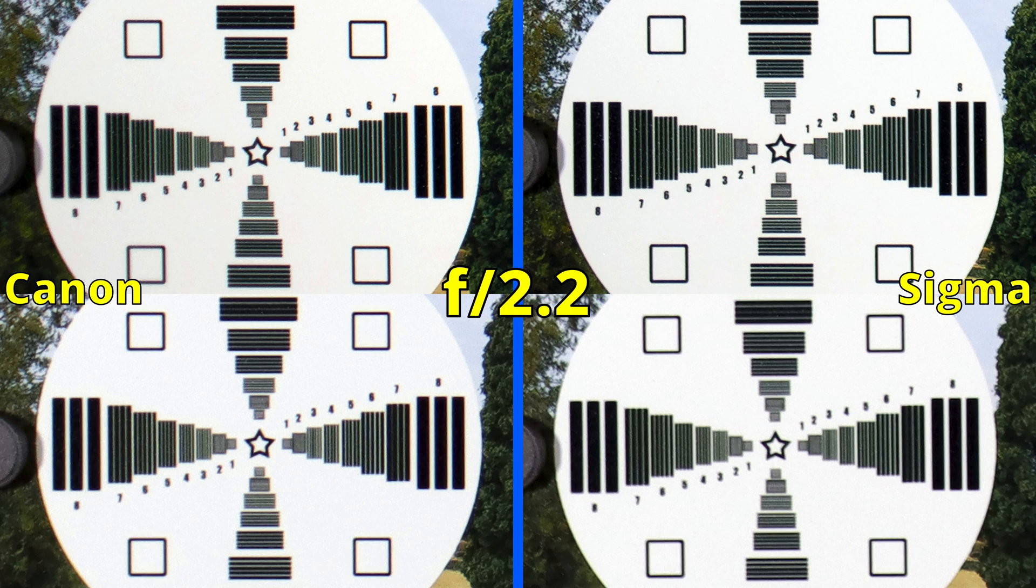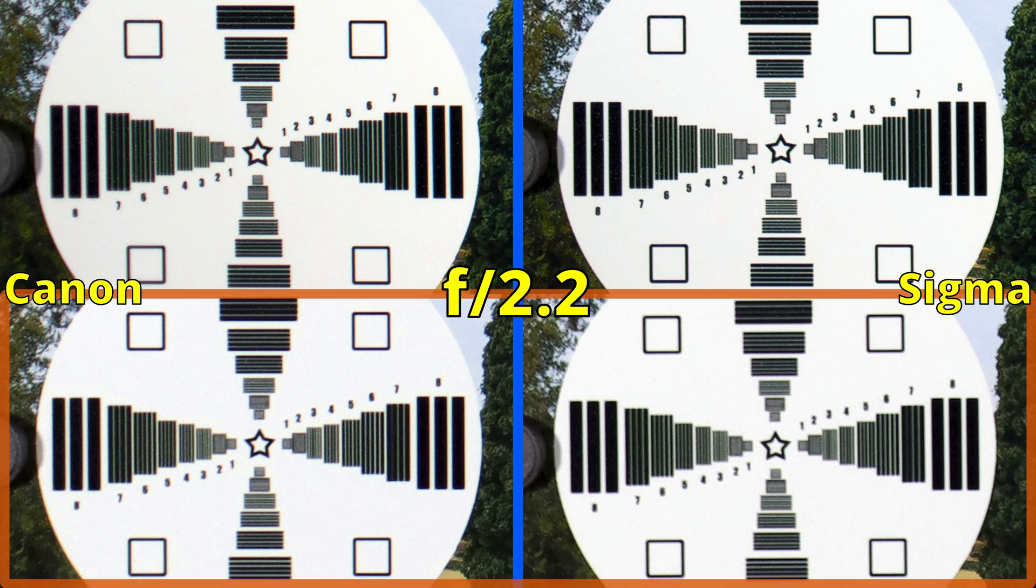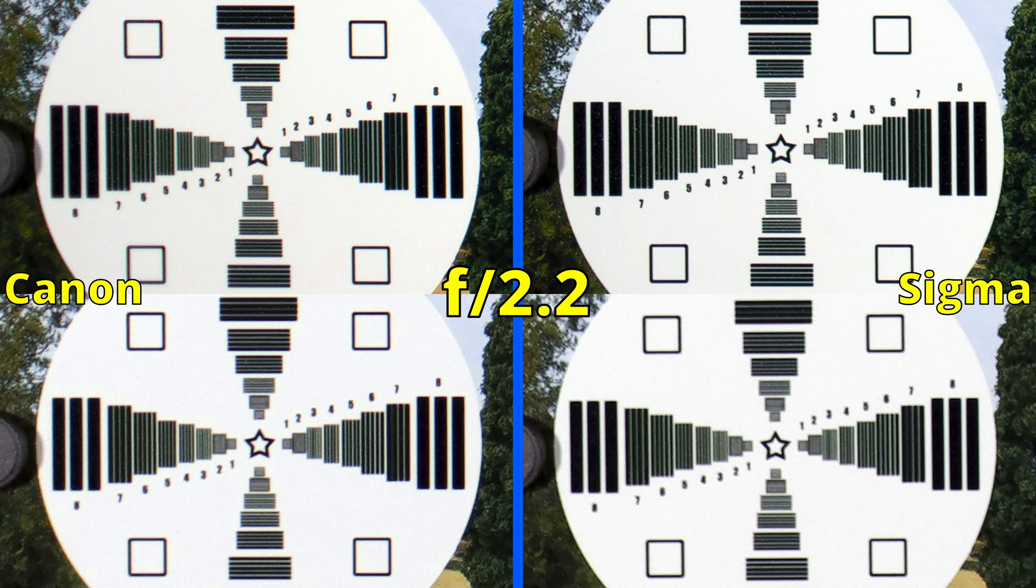At f2.2, indeed, the Sigma lens looks slightly sharper on full frame. But we still don't see good results. On APS-C, the situation is worse and there are no differences. Closing to f2.8 and we have good sharpness on full frame and decent sharpness on APS-C. The two lenses are head to head now.